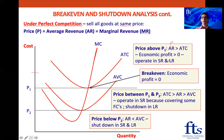If the price equals P1, we're breaking even because the price — which is the average revenue — is the same as the average total cost. So the economic profit is zero. But remember, even when economic profit is zero, there are still normal accounting profits, because accountants don't take opportunity costs into account.